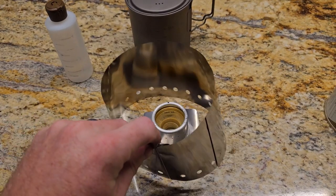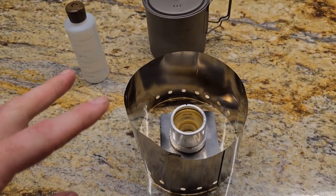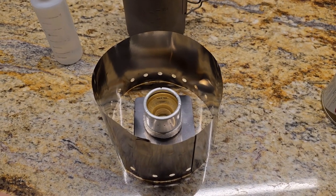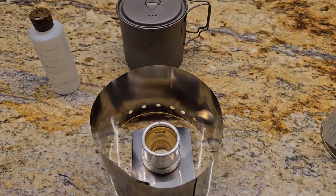Now you will have to add the windscreen around that and that's because alcohol stoves are super susceptible to wind. If you have any sort of breeze at all you're going to lose all your heat and it's going to make this thing way less efficient than it already is.